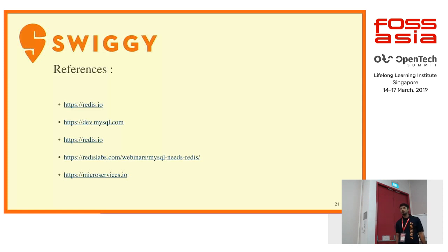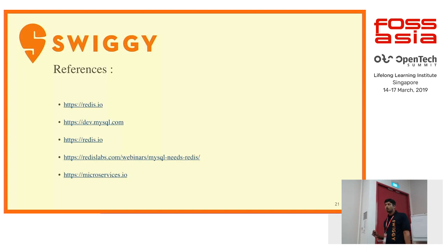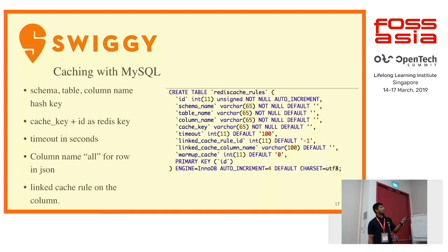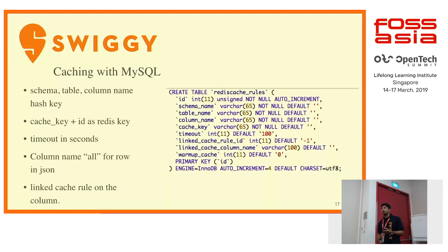Question: Is there any time limit for Redis caching — can we retain a key for a particular time? Yes, there is a timeout column. If you specify a timeout value, Redis will automatically delete the key after that timeout expires. Redis supports timeout values down to milliseconds, so you can provide millisecond-level granularity for the TTL.